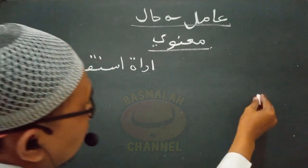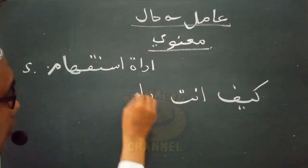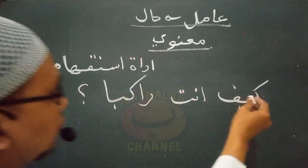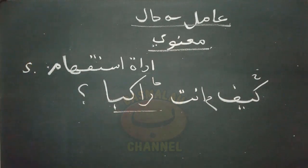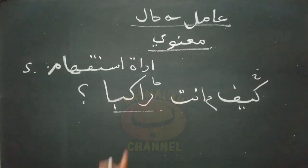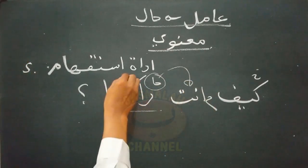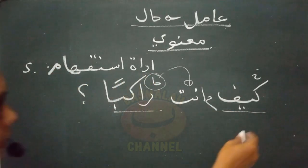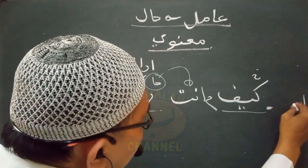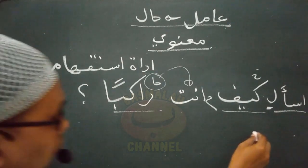Yang kelima berupa adat istifham. Contohnya 'kaifa anta rokiban' - bagaimana kamu dalam keadaan menaikin kendaraan? Lafat rokiban adalah hal yang menjelaskan sahibul halnya yaitu lafat anta, wajib nasob. Yang menasobkan adalah lafat kaifa yaitu adat istifham. Takdirannya adalah as-alu - aku bertanya.